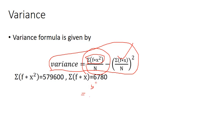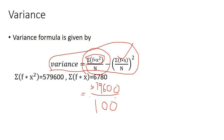Substituting into the formula: 57,900 divided by 100, minus 67.8 squared.